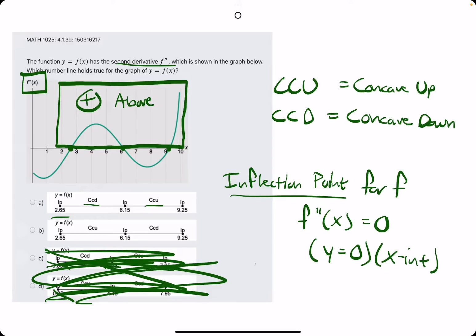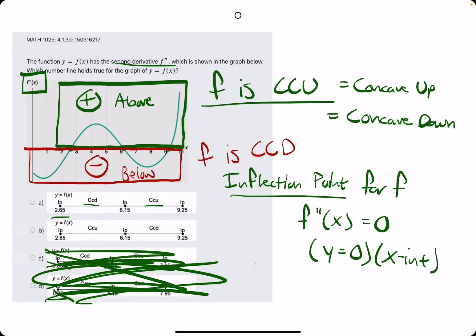To identify where f is concave up, and we are focusing on where the graph of f'' is negative or below the x-axis to tell us where f is concave down.